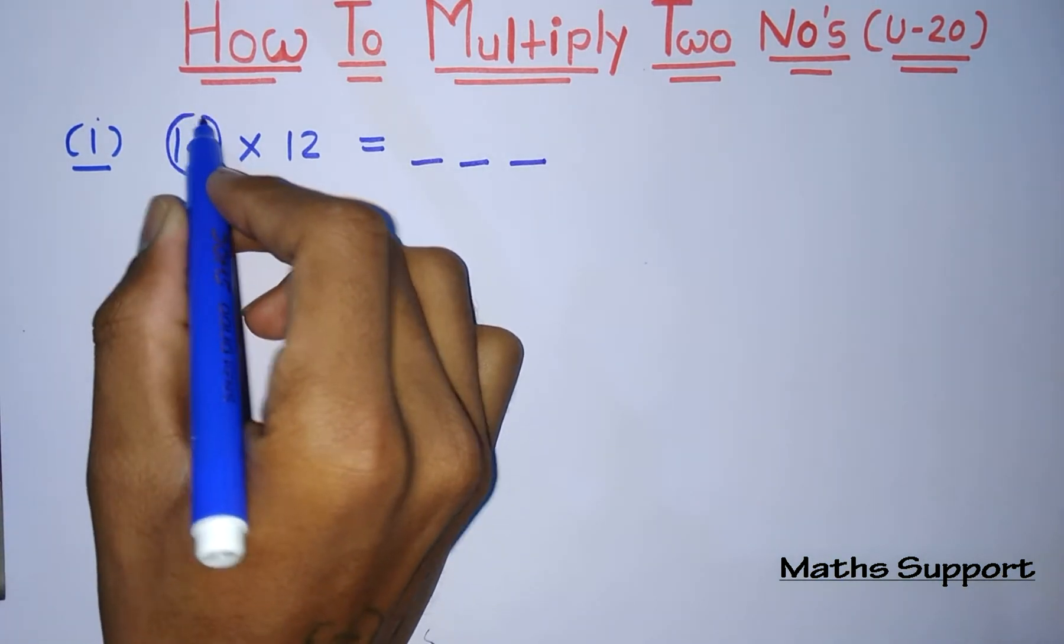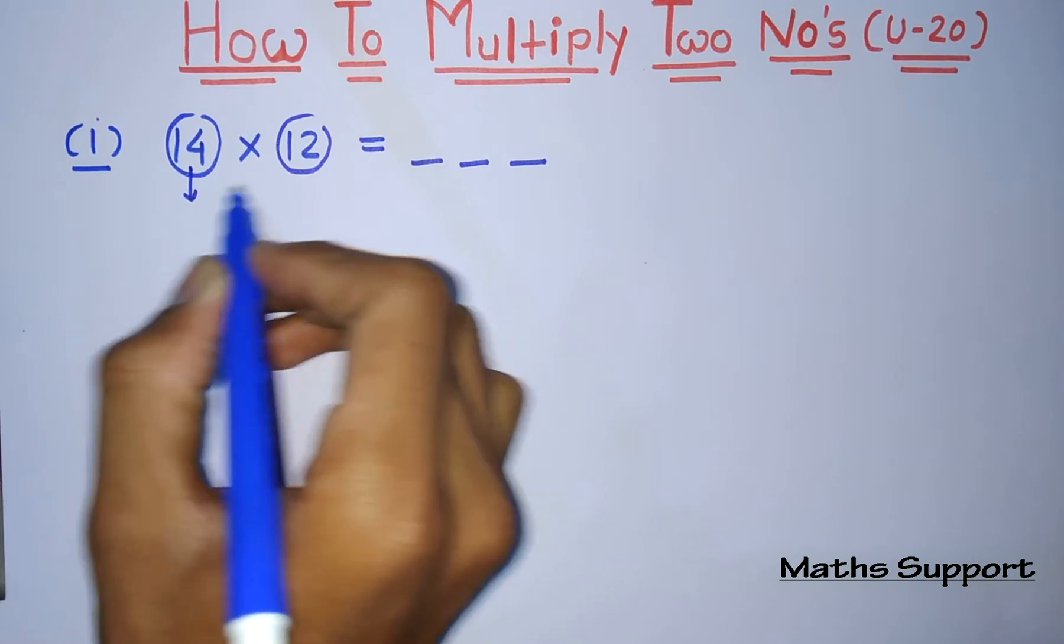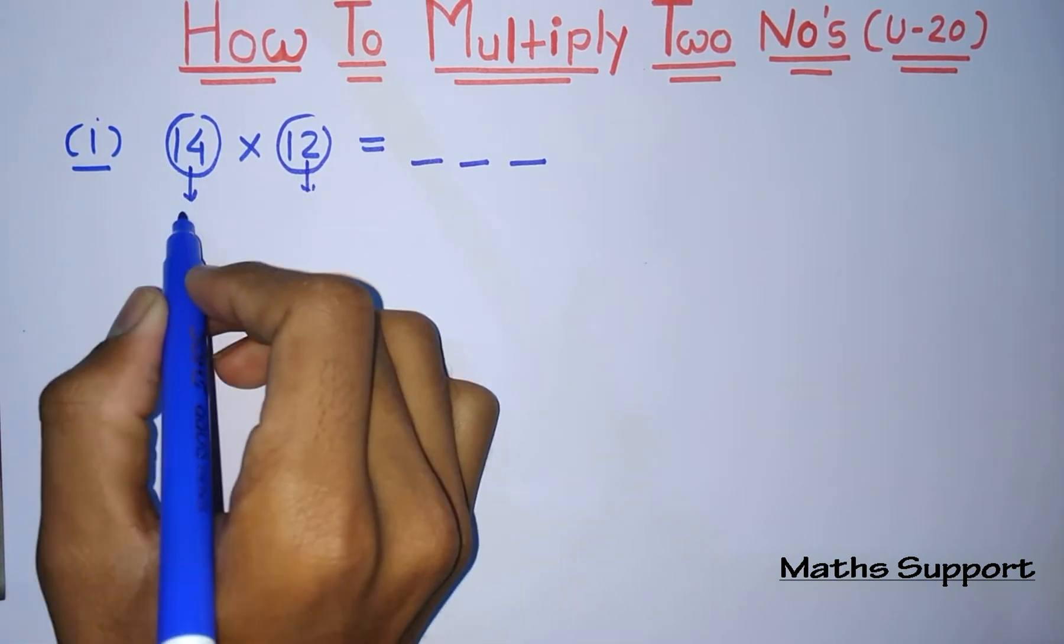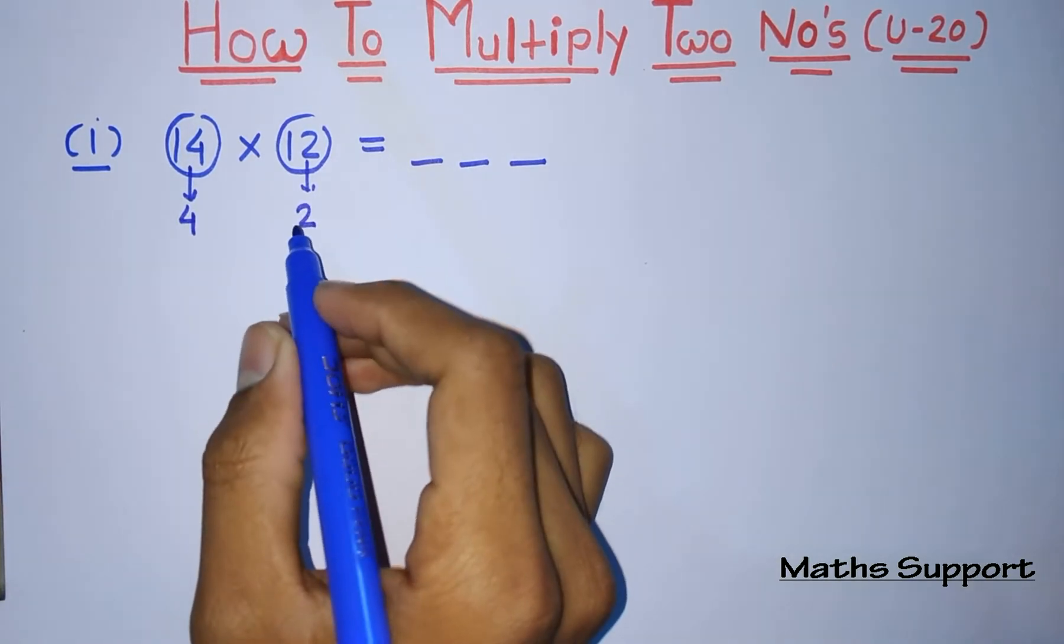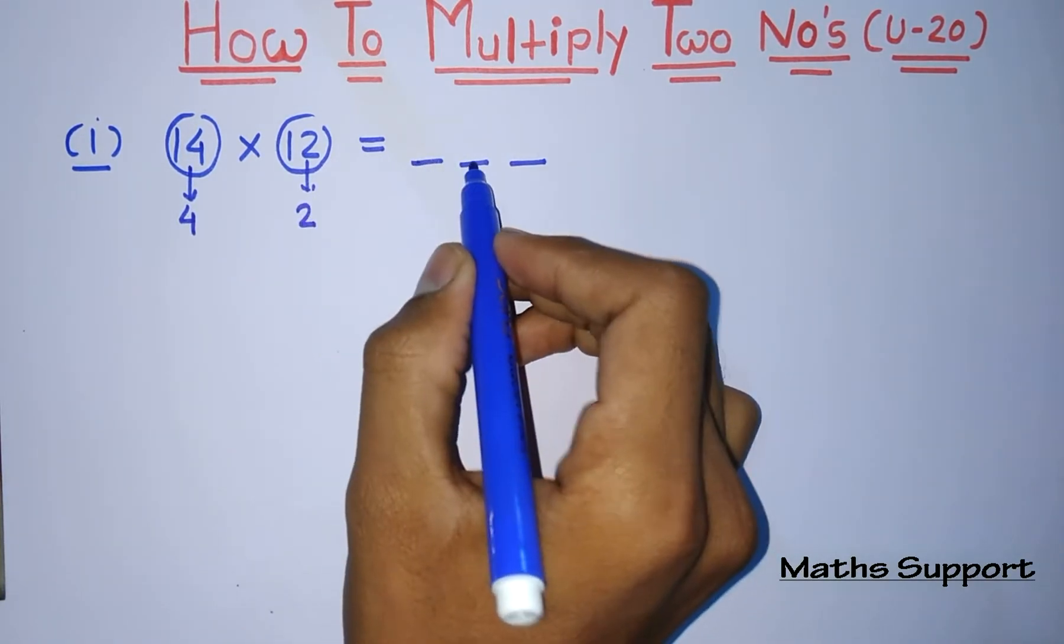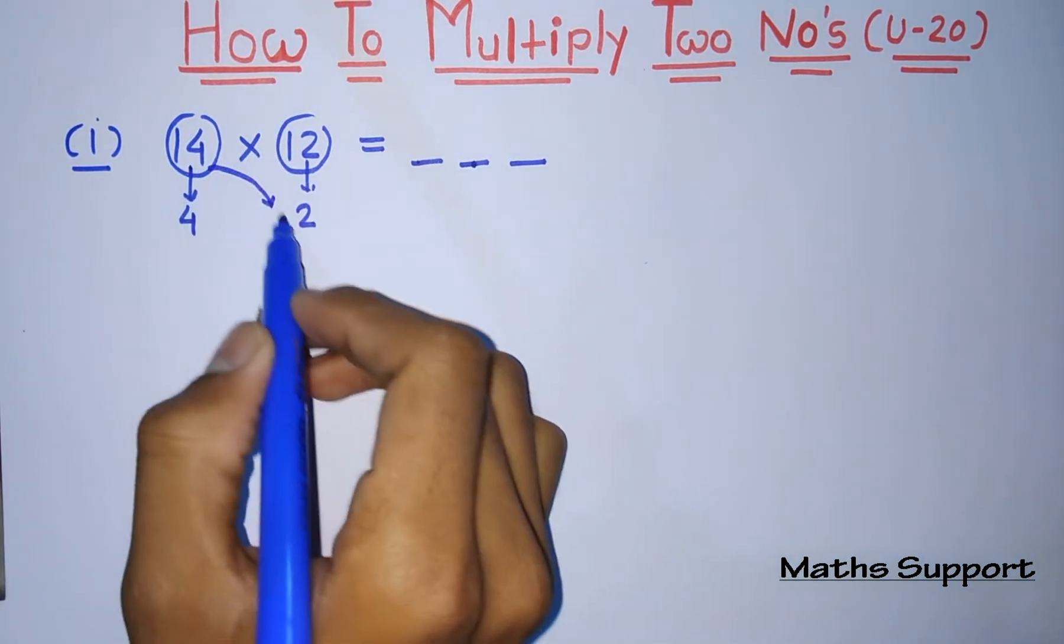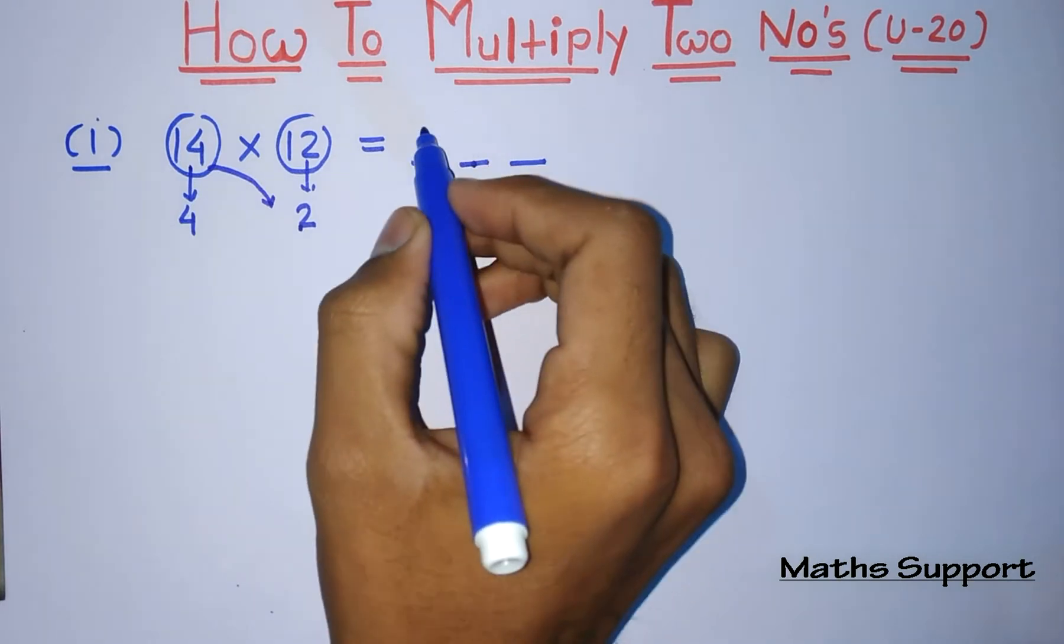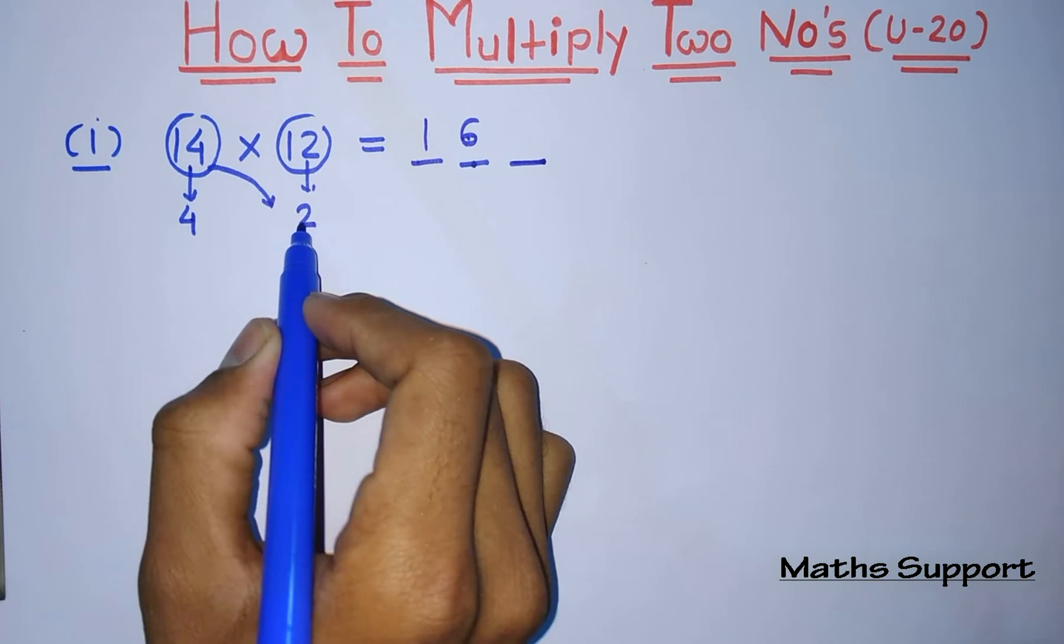First procedure is that you need to find how far both numbers are from 10. So this is 4 from the 10, and this is 2 from the 10. Now for the first two digits, you need to add cross, means 14 plus 2, that is 16. And for the last digit, you need to multiply these two numbers, that is 4 into 2, so that is 8.